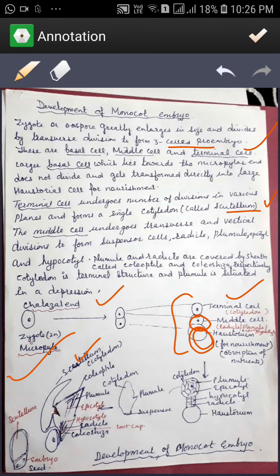Plumule and radicle will be covered by a sheath known as coleoptile and coleorhiza respectively. Plumule will be covered by the coleoptile and radicle will be covered by the coleorhiza.